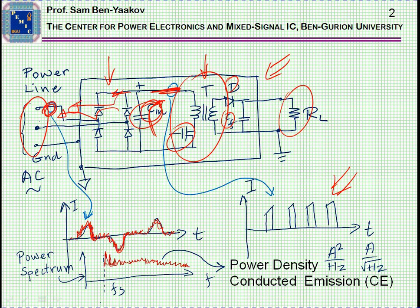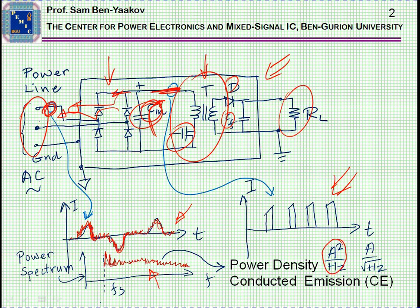Now, if I look at the pulse spectrum of this signal, excluding the very low frequency of the line which we are not interested in, we're going to see something of this sort. So this will be the power spectrum of the high frequency component. This is a power density of a current, which is normally expressed in terms of amp squared over hertz, sometimes as amp over square root of hertz. Now, this is actually the conducted emission of this particular power supply.